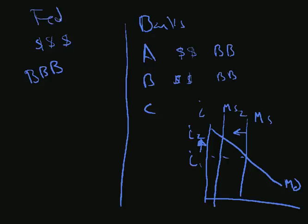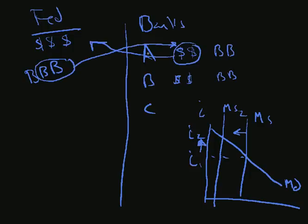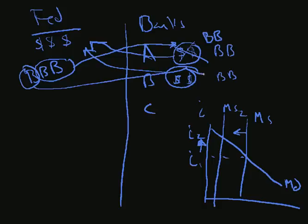Now what would the Fed try to do in this case? The Fed's going to try to take these dollars away. They actually sell bonds to the banks. The banks give the Fed their money, and the money supply has decreased. These banks have more bonds, but they're going to send the money this way. The Federal Reserve is going to send bonds this way. Now the banks have more bonds but less money.